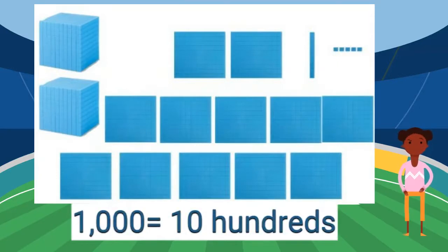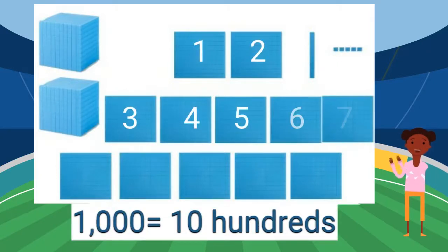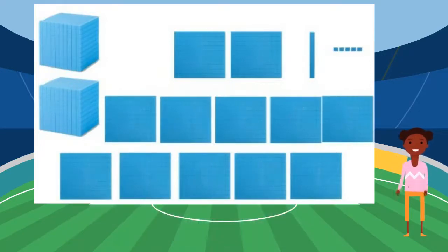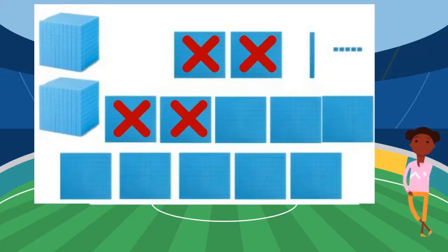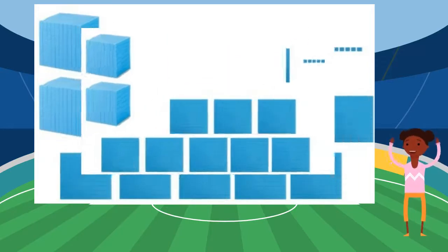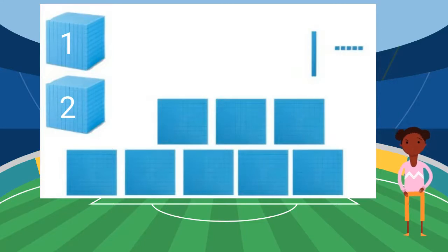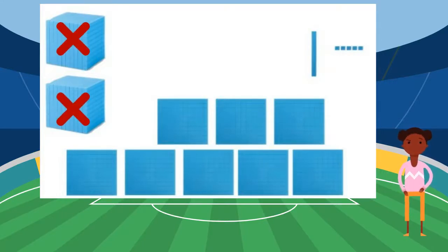One thousand equals ten hundreds. Now how many hundreds do I have? Yes, I have 12 hundreds. Can I take away four? Yes, 12 minus four is eight. I have eight hundreds. The last step is to look at what thousands we have left. Since we regrouped one, we only have two thousands. I need to take away two thousands. Now I have zero thousands.